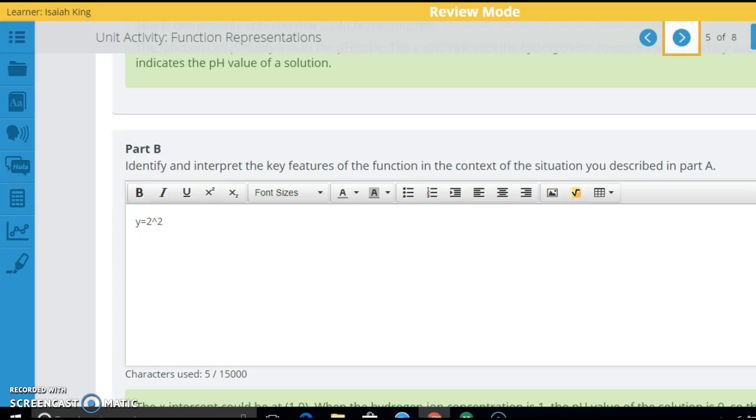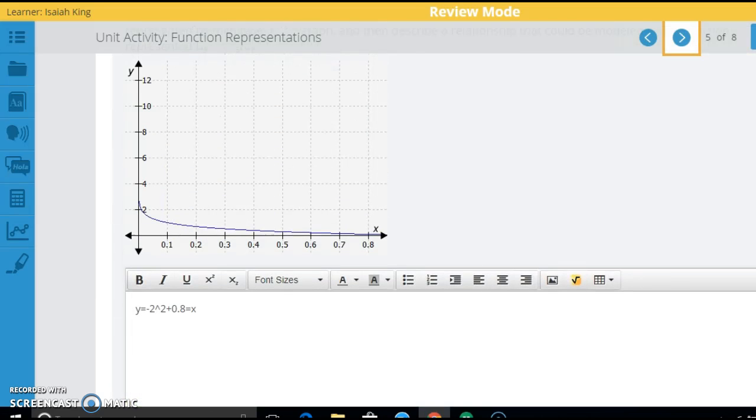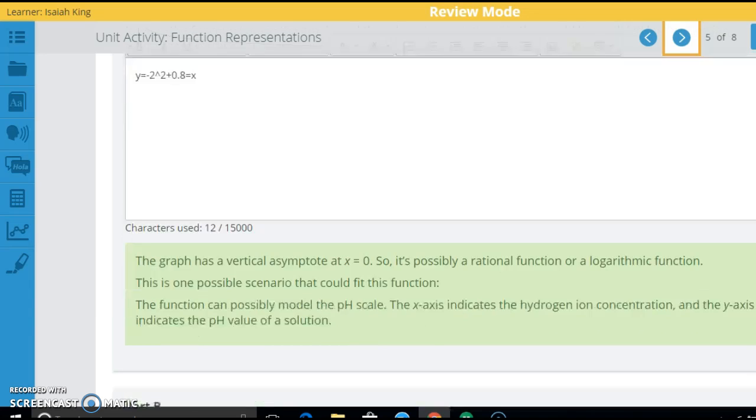Now it says identify and interpret the key features of the function in the context of the situation. So like I said, you're going to say, whatever your situation is, you're going to say, you know, at 0 years, it had 3, you know, 3 grams of something. And then you're going to talk about that, the key features, so y-intercept, if it's decaying or growing, decreasing, increasing. And you're going to talk about those key features there, including the asymptote and what it means in your situation.